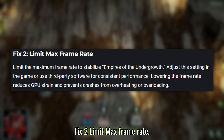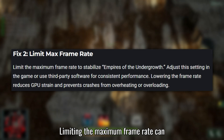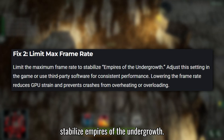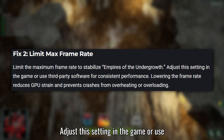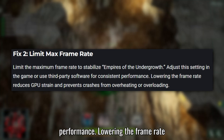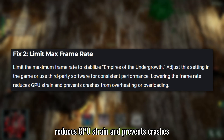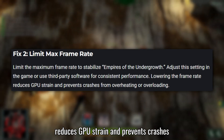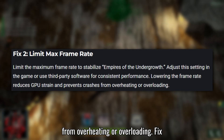Fix 2: Limit max frame rate. Limiting the maximum frame rate can stabilize Empires of the Undergrowth. Adjust this setting in the game or use third-party software for consistent performance. Lowering the frame rate reduces GPU strain and prevents crashes from overheating or overloading.